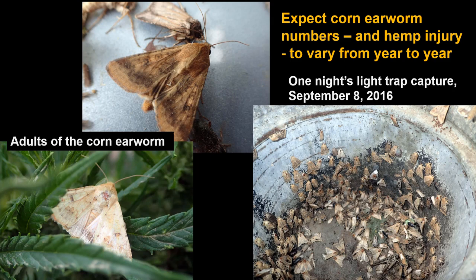Corn earworm will vary from year to year — you could be hammered one year and get nothing the next. Some areas will have a more chronic problem. But you can predict potential for a problem if a large number of moths are flying in your area when hemp is coming into flower. For example, a light trap sample from September 8th, 2016, which was a bad year for corn earworm in southeast Colorado's Arkansas Valley, showed a lot of moths — and a lot of damage followed.